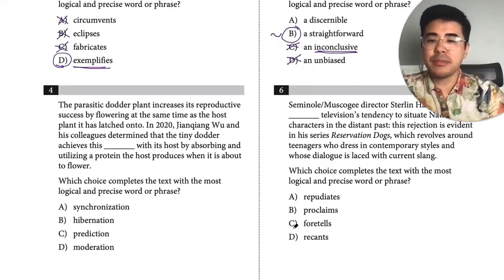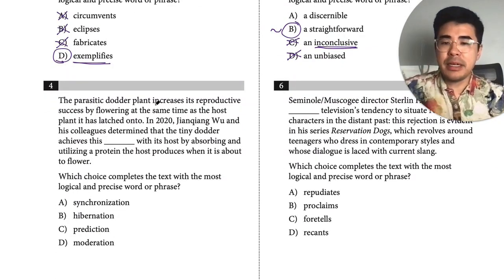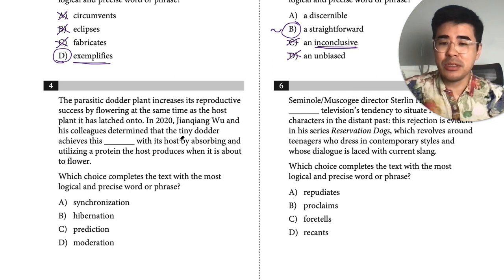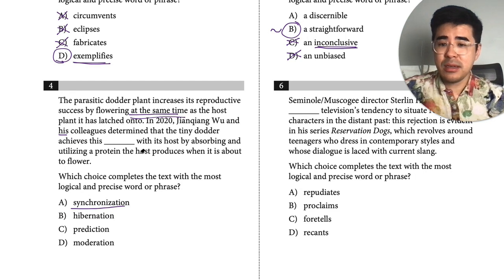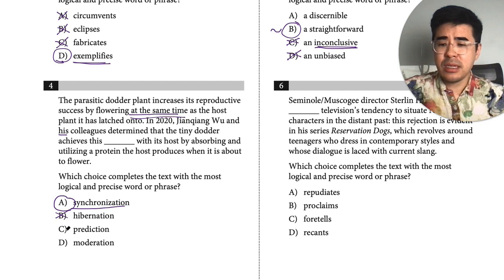The parasitic daughter plant increases reproductive success by flowering at the same time as the host plant it has latched onto. In 2020, researchers determined that the tiny daughter achieves this 'synchronization' — because the passage says 'at the same time,' that's evidence-based. Synchronization is the only one that makes the most sense. There's nothing about hibernation, the scientists are predicting but not the plant, and the plant's not moderating either. Those words just don't work.